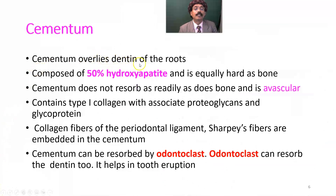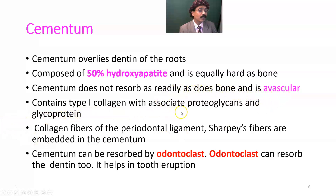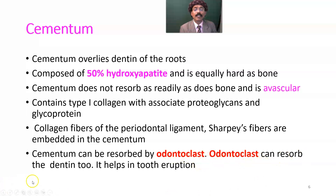Cementum overlies the dentin of the roots. It is composed of 50% hydroxyapatite and is equally hard as bone. Cementum does not resorb as readily as bone and is avascular. It contains type 1 collagen with associated proteoglycans and glycoproteins. Collagen fibers of the periodontal ligament are embedded in the cementum. Cementum can be resorbed by odontoclasts, which are osteoclast-like cells that can resorb dentin and tooth tissue — essential for tooth eruption.